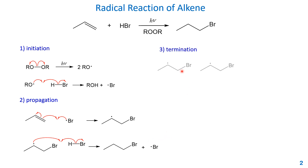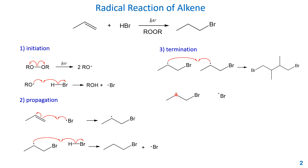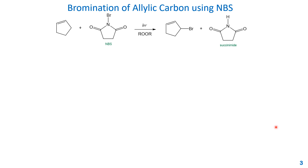The termination step involves the quenching of radicals. For example, two secondary radicals can react with each other to form a dibromide, or a secondary radical can react with a bromine radical to form a 1,2-dibromide or a 1,4-dibromide. Two bromine radicals can also combine to form the bromine molecule. That is the example of the reaction of alkene with hydrogen bromide.